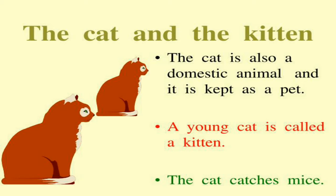A young cat is called a kitten. The cat catches mice — we all know that a cat eats mice or mouse. The cat is a domestic animal and we are also familiar with keeping a kitten or cat as a pet.